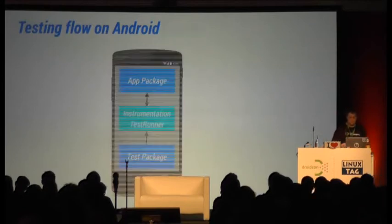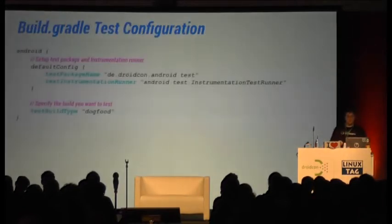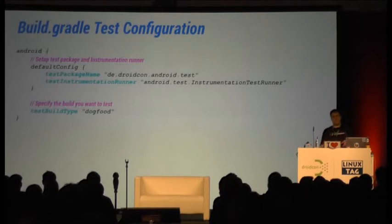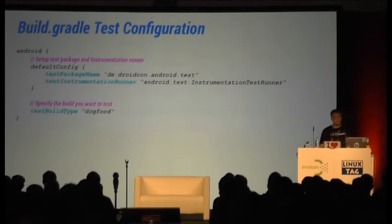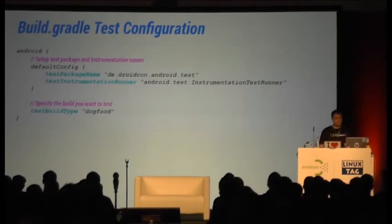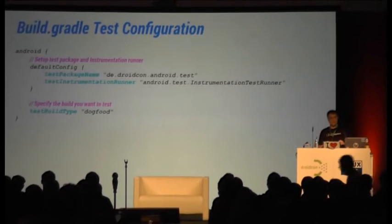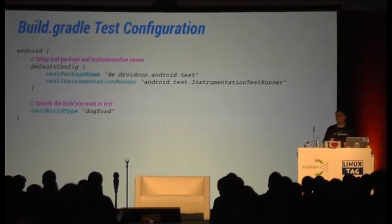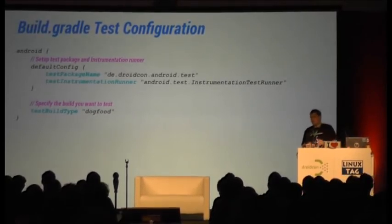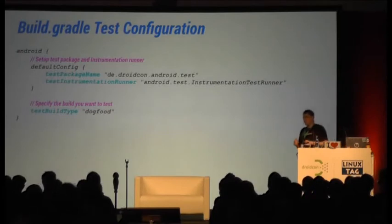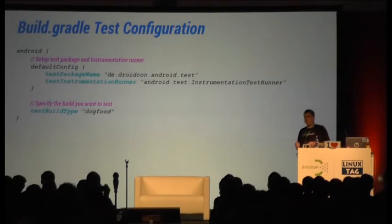If you want to get started with testing in Gradle, it's actually pretty simple. All you have to do is, in your defaultConfig block, set the test package — that's the name of your test package — and set the instrumentation runner you want to use. Recently, we also introduced something called test build type.